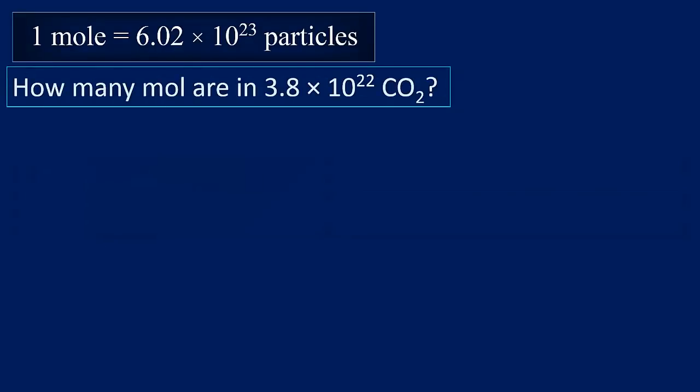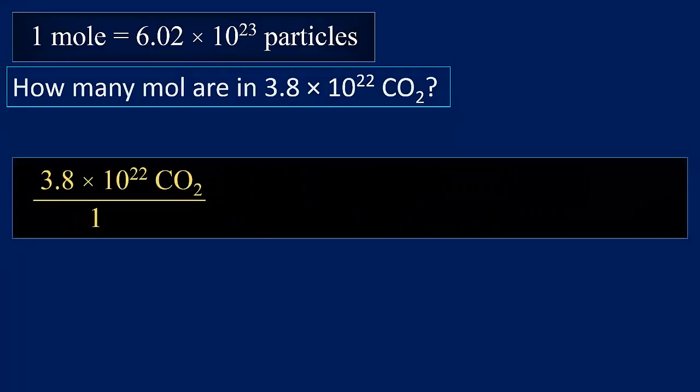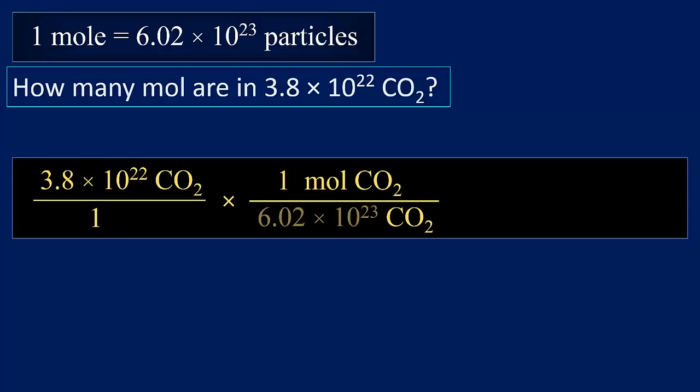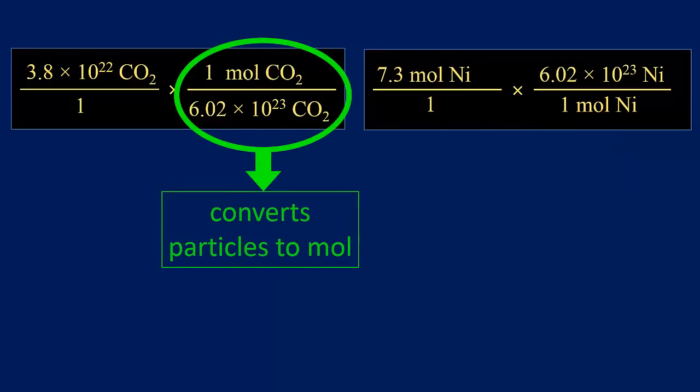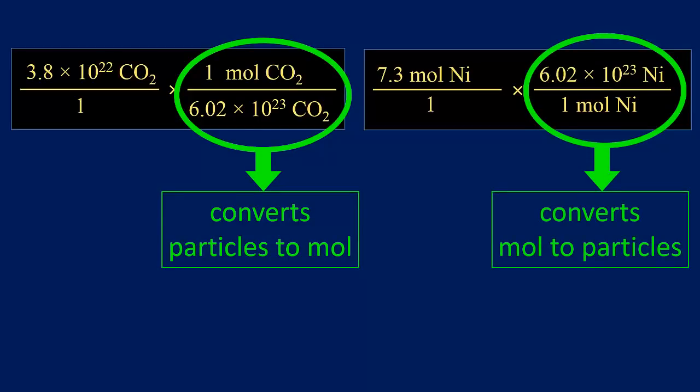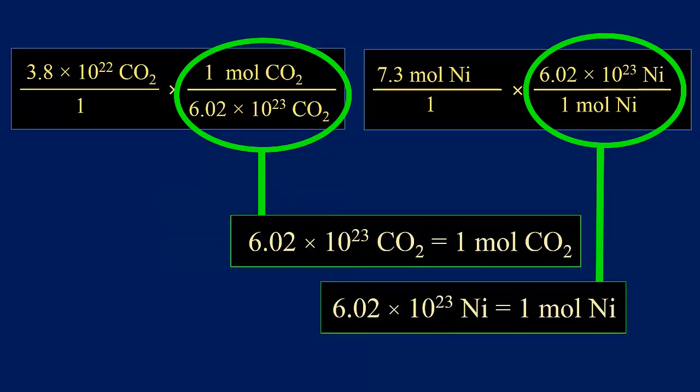In this last of the four single step conversion problems, we are given particles, in this case molecules of carbon dioxide, and asked to find moles. As before, we begin with the amount given in the problem, multiply by a conversion factor with the unit given on bottom, unit wanted on top, fill in the numerical relationship, one mole of carbon dioxide molecules for every 6.02 times 10 to the 23 carbon dioxide molecules. Molecules cancel and we are left with moles. Again, if we compare the two problems side by side, we see that moles or particles can be on top or bottom depending on the needs of the calculation. This converts molecules to moles. This gets us moles to atoms. They can be reciprocals because they derive from mathematical equalities.